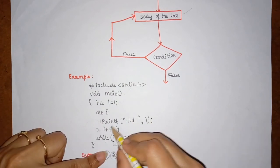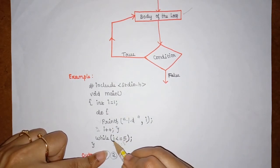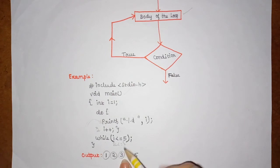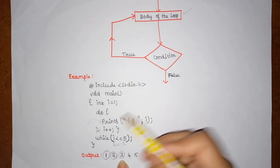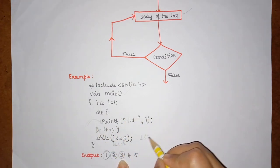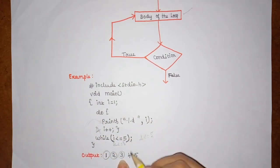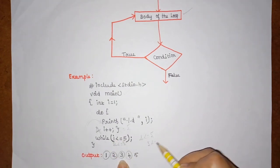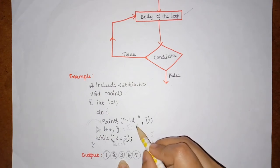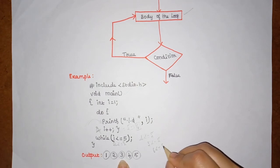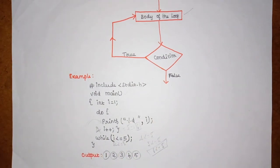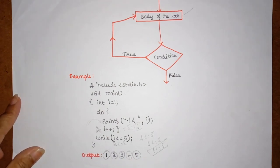i is incremented to three, which is still less than or equal to five, so three is printed. Then i becomes four — still true, four is printed. Then i becomes five — five is less than or equal to five, true, so five is printed. Then i is incremented to six. Now checking whether six is less than or equal to five — this is false, so the loop terminates. The final output is: 1 2 3 4 5.